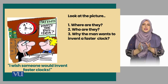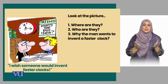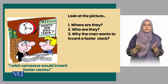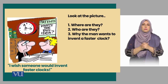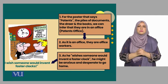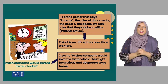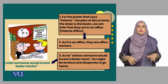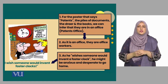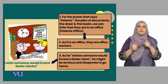Let's have a look at this image and answer the questions: what is the setting of this image, who these people are, and why this man particularly wishes that somebody invented a clock that works faster. Looking at the setting, the image shows a desk full of documents and a desk drawer, so we can infer that the setting is like an office room.